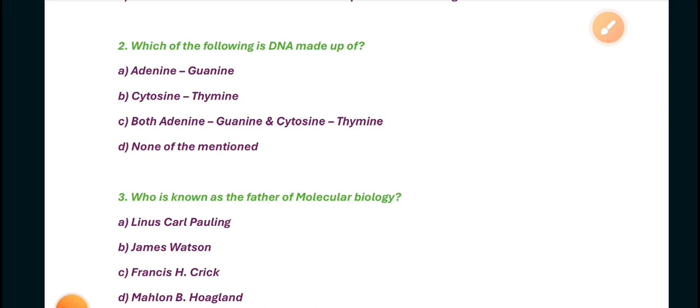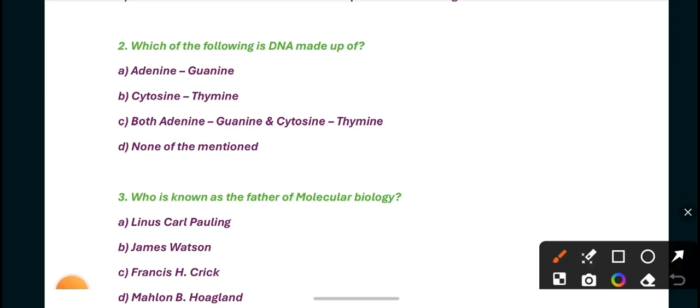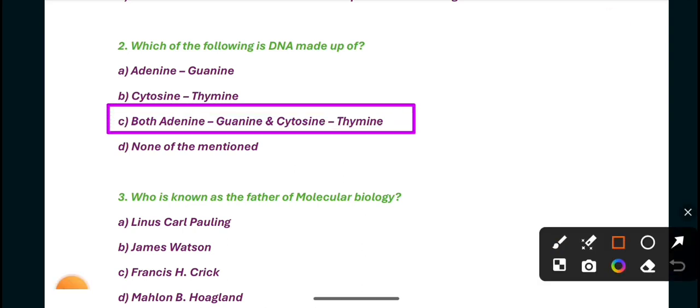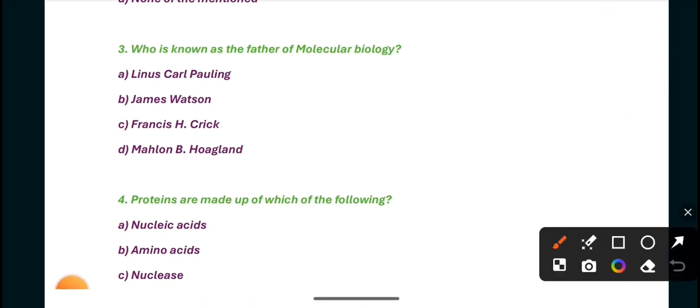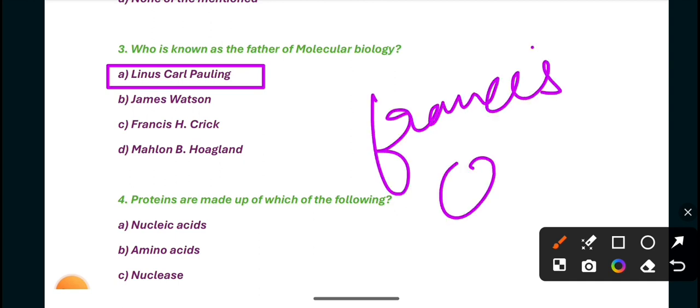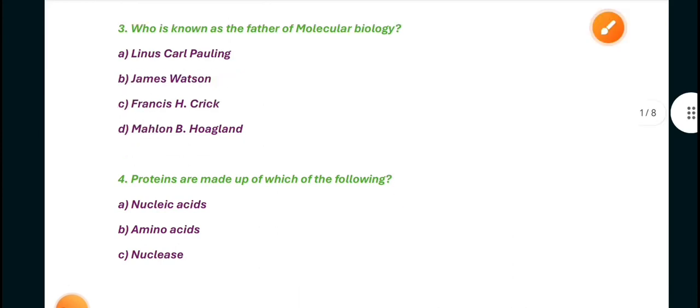Second question: Which of the following is DNA made up of? DNA is made of C, both adenine, guanine, cytosine, and thymine. Next, who is known as the father of molecular biology? The answer is A, Linus Pauling. Pauling was called the father of molecular biology by Francis Crick for the discovery of sickle cell anemia.